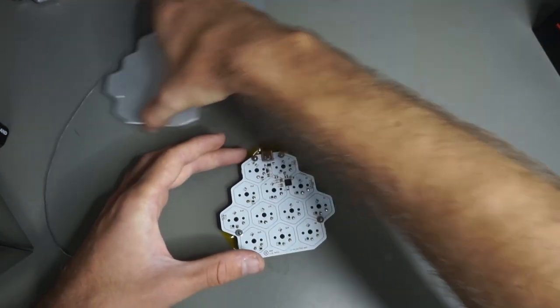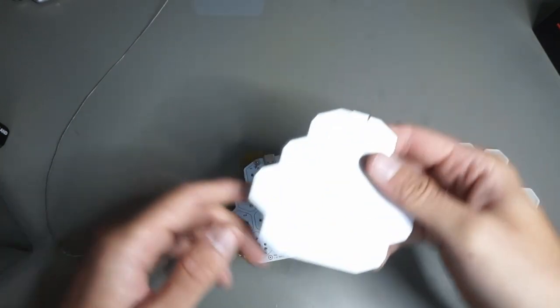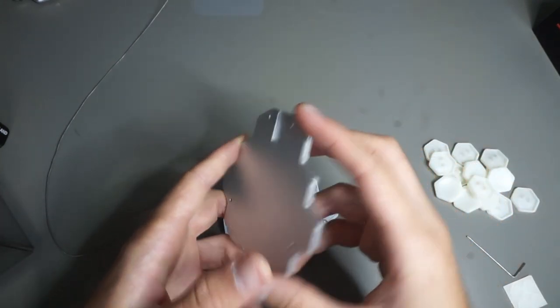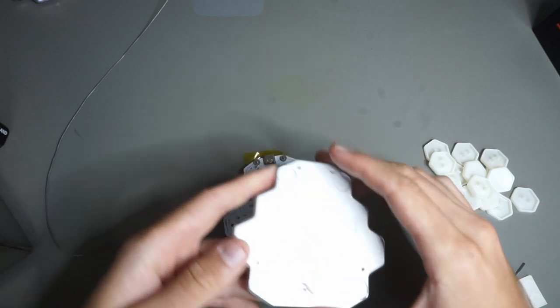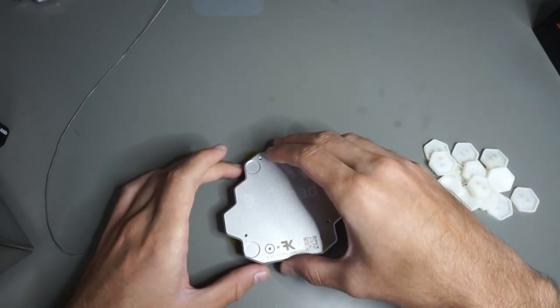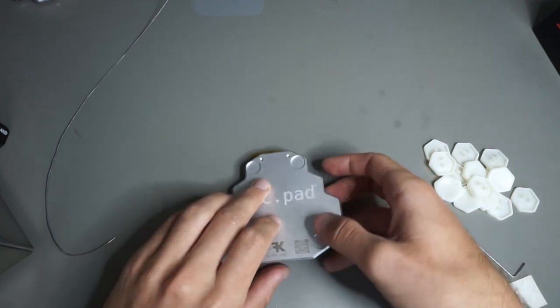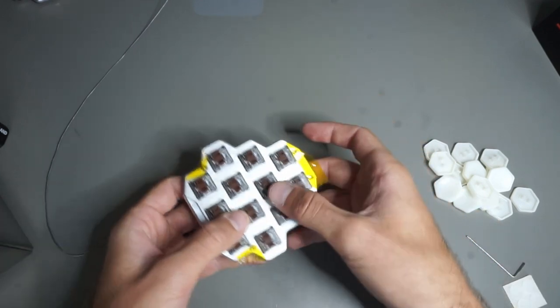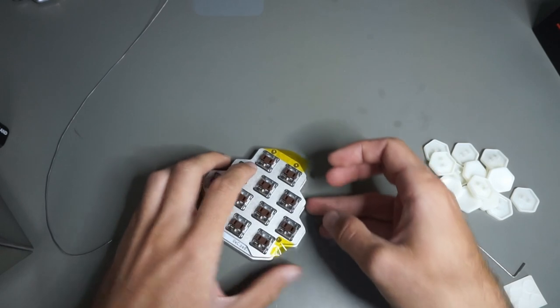With that done you can take the bottom plate, turn it around so that the USB cutout is facing the circuit board and so that you can see the engravings on the bottom and just place it on top of the screws. You should be able to feel when the screws line up with the holes and then you can take everything and flip it back around.